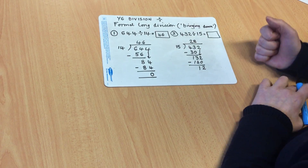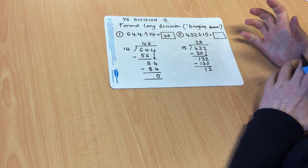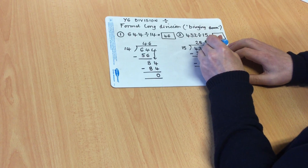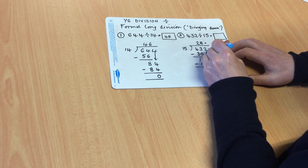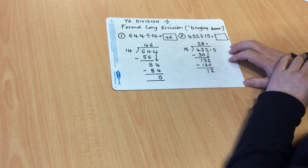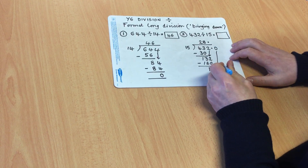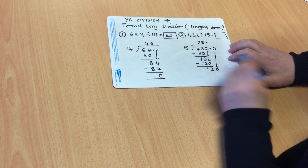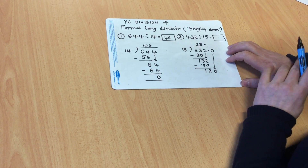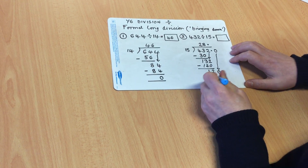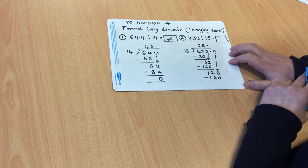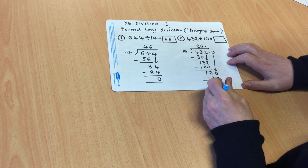At this point I have a remainder, but I need to have a decimal answer. So I need to put in my decimal points and a 0 in the tenths column. That 0 I then bring down to make the 12 into 120. And I know from before that 8 lots of 15, or 8 multiplied by 15, is 120.